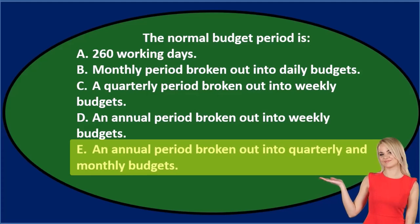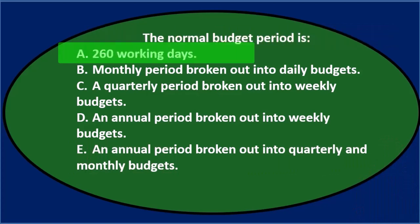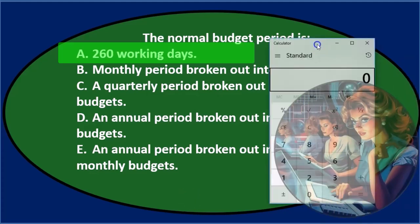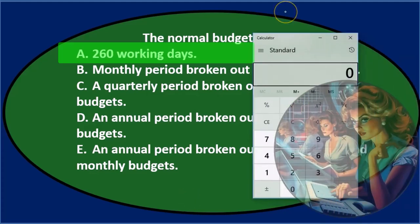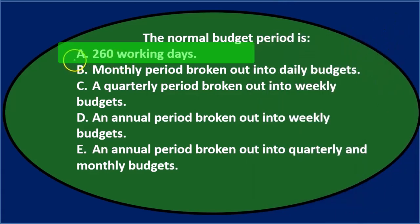Let's go through this again using the process of elimination. The normal budget period is A. 260 working days. That seems like an odd kind of period. I think they got that number by saying five work days times 52 weeks equals 260, but that still doesn't seem normal.